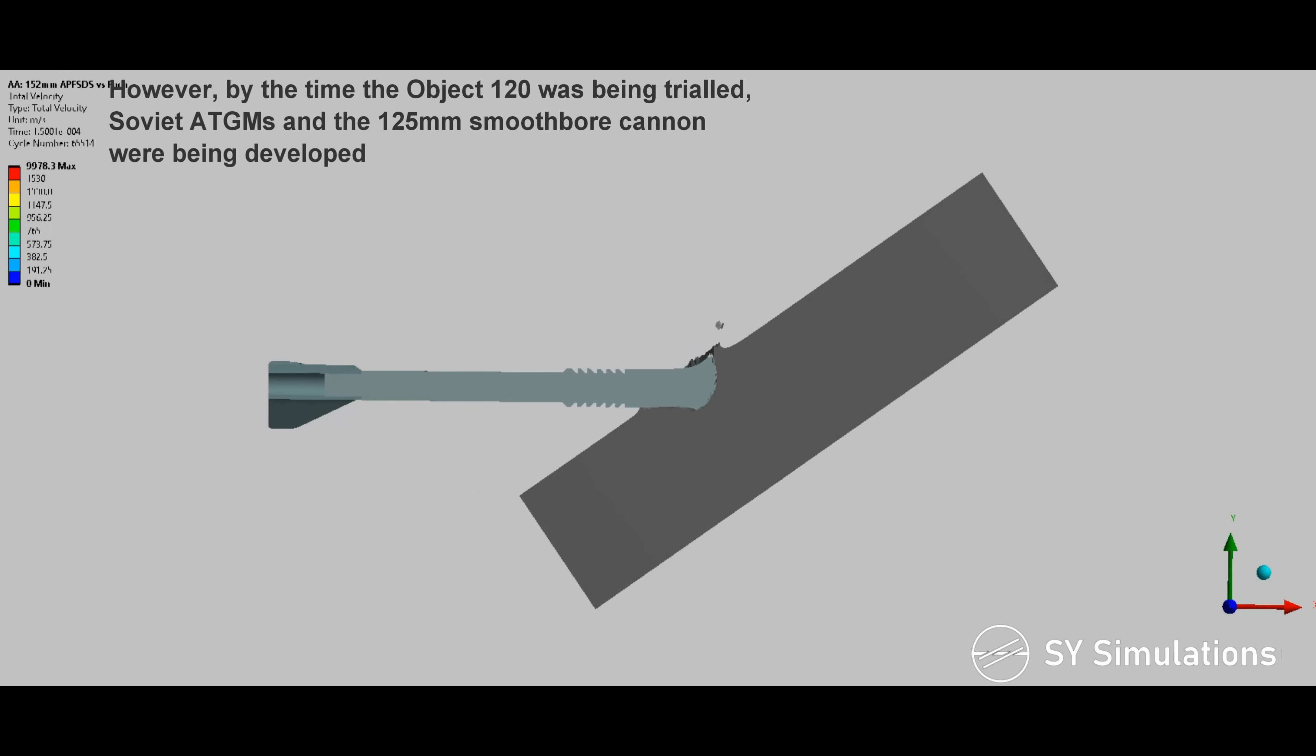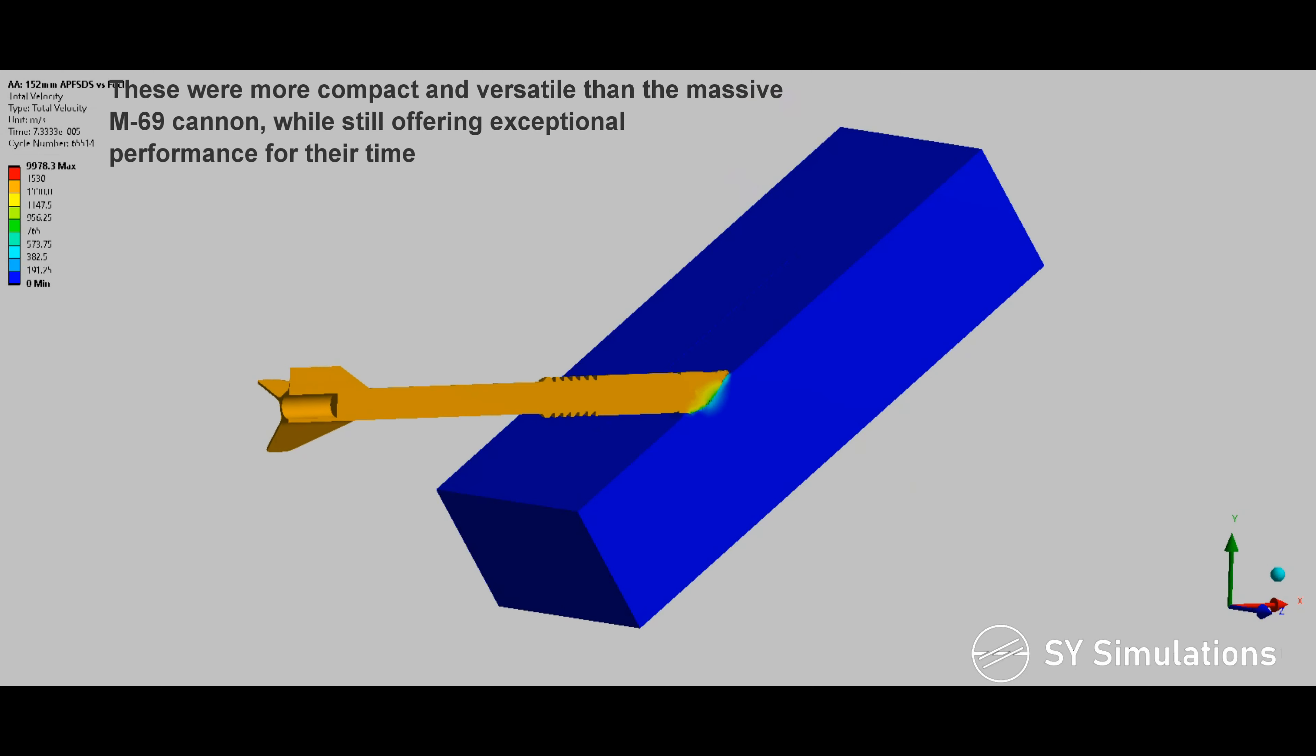However, by the time the Object 120 was being trialed, Soviet anti-tank guided missiles and the 125mm smoothbore cannon were being developed. These were more compact and versatile than the massive M-69 cannon, while still offering exceptional performance for their time.